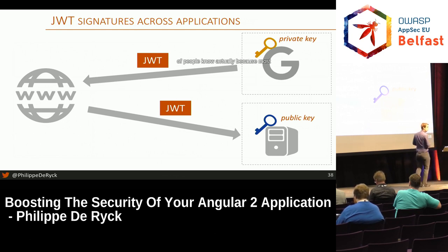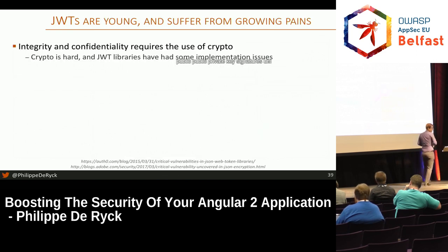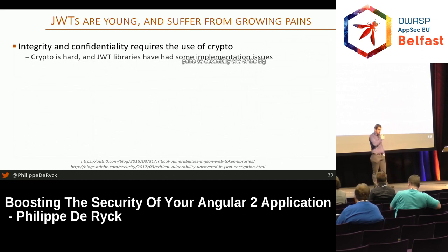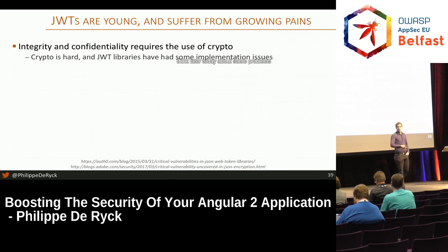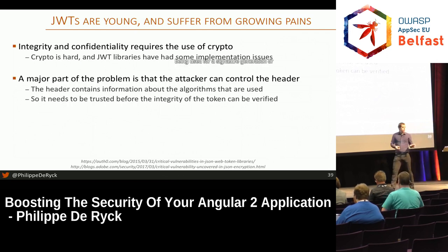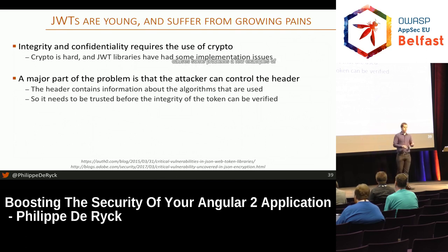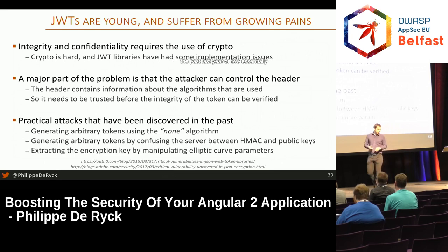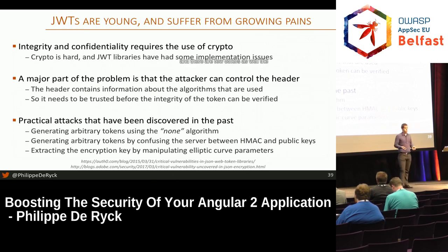Most people only talk about the shared HMAC mechanism and not about public-private key signatures. JWT tokens are relatively young and have some growing pains — they use cryptography, and crypto is really hard. One big problem: the header contains the algorithm used for signature generation, but the header can't be trusted until the signature is verified, yet you need the header information to verify the signature. Libraries have accepted the 'none' algorithm — meaning no verification at all — and other similar issues. The links are at the bottom of the slide.